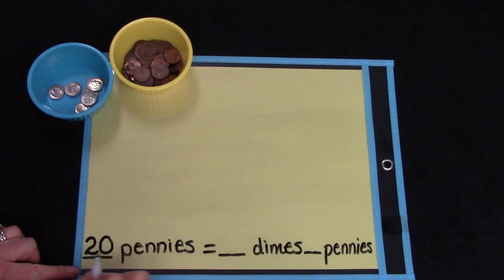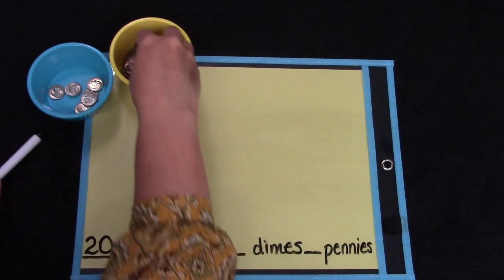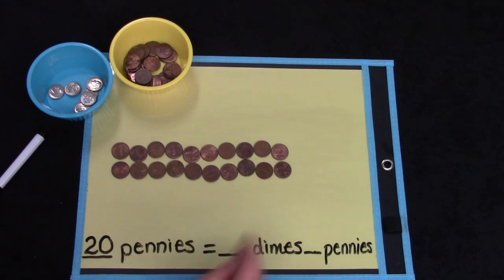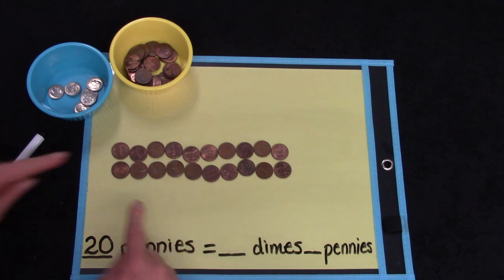I would like for you to get out 20 pennies. I have 20 pennies. Now, if I can trade 10 pennies for a dime, how many dimes could I trade for? Let's see.